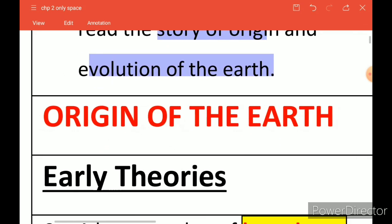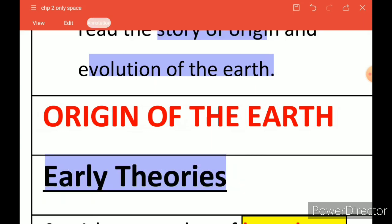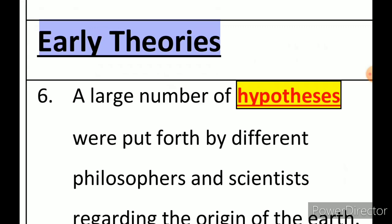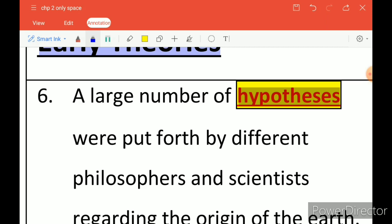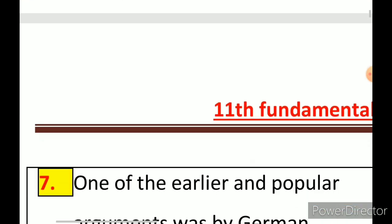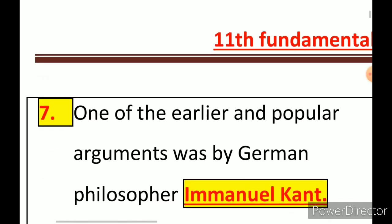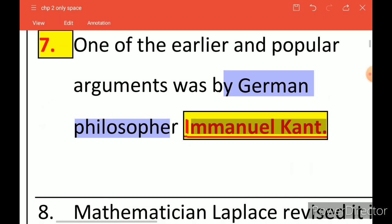The first topic of your book is the origin of the Earth. So many theories have been given earlier, and later many philosophies and hypotheses were proposed. A hypothesis is where a law is not yet framed but a concept is given. So many philosophers and scientists gave their own viewpoints on the origin of the Earth. The first theory on the origin of Earth and planets was given by a German philosopher named Immanuel Kant.